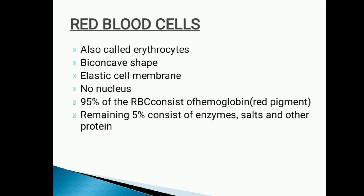The RBC count is higher in neonates, athletes, and highlanders — the people who live at high altitudes are known as highlanders. The main component of RBC is hemoglobin, and a proper description regarding hemoglobin will be taught in our next lecture.